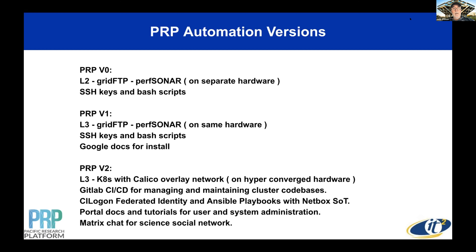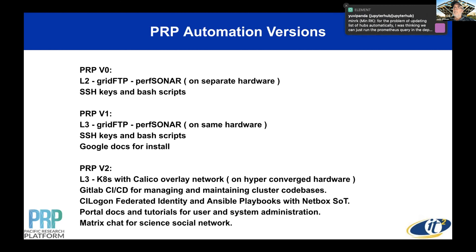At PRP v1, we got tired of layer 2 spaghetti and went layer 3 exclusively. That simplified a lot of the underlying spaghetti issues, but we did start publishing Google Docs for how to create your own Fiona node and attach it to our infrastructure.